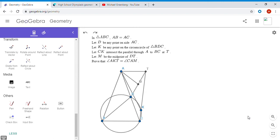Now we let CK intersect the parallel through A to BC at T, and we let M be the midpoint of DT. We want to show that angle AKT is equal to angle CAM.